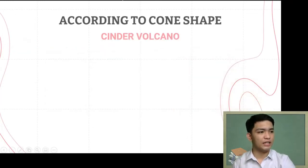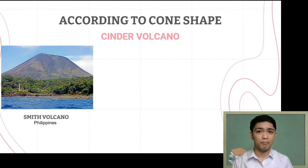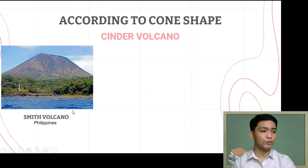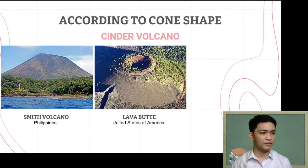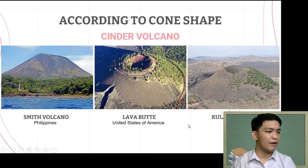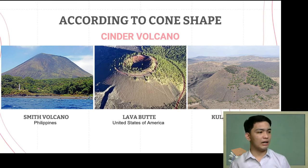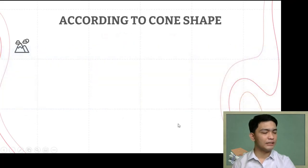Examples of cinder volcanoes include Smith Volcano in the Philippines, specifically in the Babuyan Islands — it has a much steeper slope and is smaller compared to Mayon Volcano. Another example is Lava Butte in the United States, which has only one vent at the top center. A third example is Kula Volcano in Turkey, which looks like a hill — similar to the Chocolate Hills.